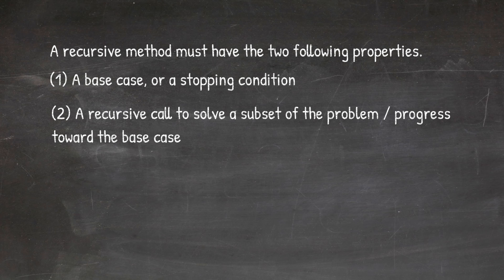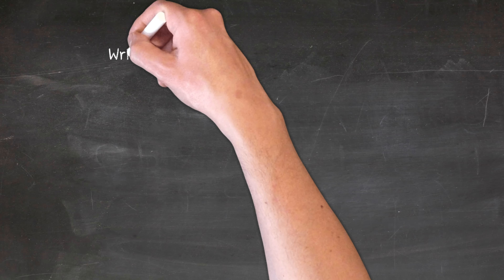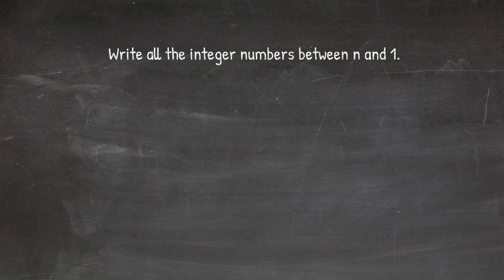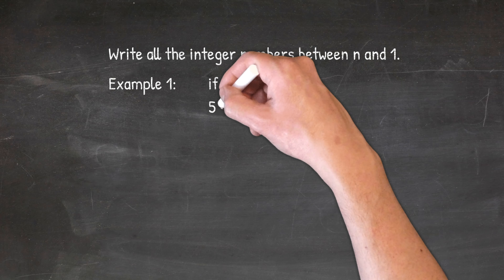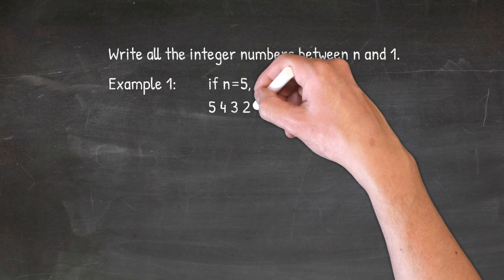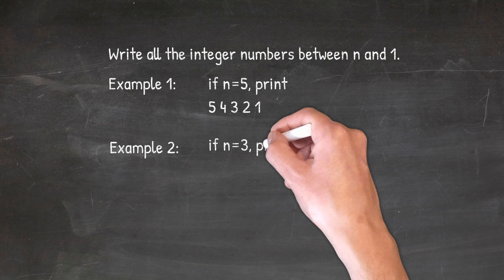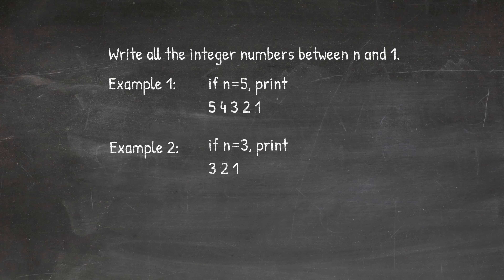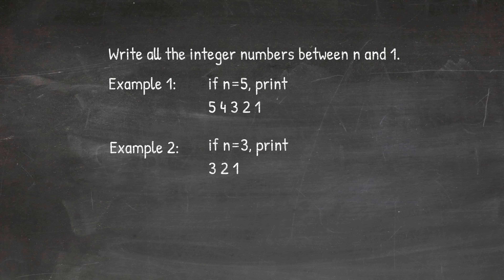Let us discuss this theory using an example. Write all the integer numbers between n and 1. That is, if n is equal to 5, we have to print 5, 4, 3, 2, 1. If n is equal to 3, then we have to print 3, 2, 1. We can easily solve this problem without any recursion. We can directly use a loop.